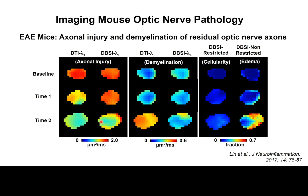In contrast, DPSI is more accurate in reflecting injury — you can see that the injury was not prominent until the second time point. Similarly, DTI radial diffusivity shows an increase indicating demyelination. DPSI could tell you the demyelination is also present but not as pronounced. DPSI also shows what happened in the inflammatory component: look at cellularity, you can see a slight increase over time, and edema shows a significant increase at the second time point.